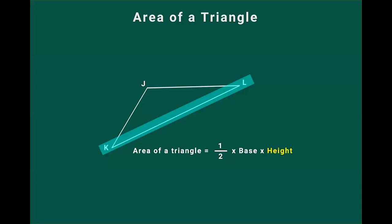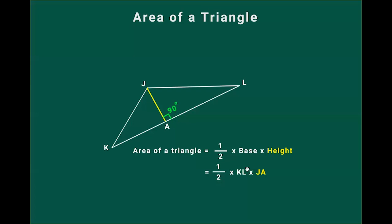The perpendicular distance in this case — JA — from the vertex J to the base KL, is known as the height of the triangle. When we say perpendicular distance, we mean a line which makes an angle of 90 degrees with the base KL. So the area of the triangle will be half into KL, which is the base, into height JA.